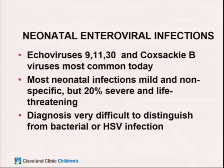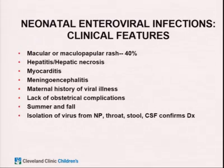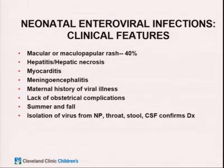Enteroviral infections: both echoviruses and Coxsackie B are well known to cause severe neonatal infections, though only about 20% are severe and life-threatening. These babies present in a nonspecific manner, very difficult to distinguish from bacterial sepsis and herpes. Board clues for enterovirus include macular or maculopapular rash, hepatitis, hepatic necrosis, myocarditis, and meningoencephalitis, plus a maternal history of abdominal pain or diarrhea in the third trimester and a summer/fall season. Diagnosis is by isolating the virus from the nasopharynx or stool.